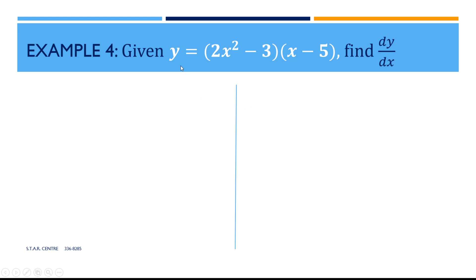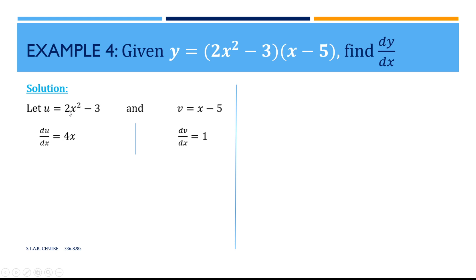Moving on to Example 4: y equal to (2x squared minus 3) times (x minus 5). We want to find dy/dx. Our first step is to substitute: let u equal 2x squared minus 3, and let v equal x minus 5. Differentiating each one: the differential of 2x squared is 4x, and the differential of minus 3 is 0. Differentiating x gives 1 and differentiating minus 5 gives 0. So du/dx equals 4x and dv/dx equals 1.